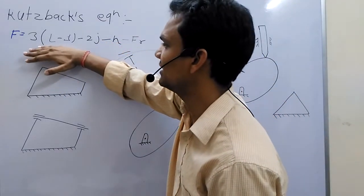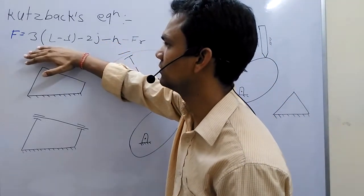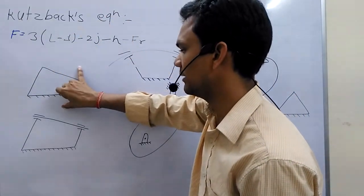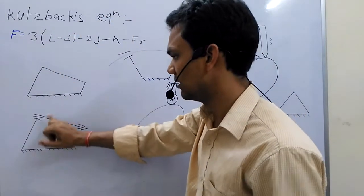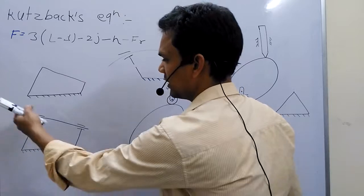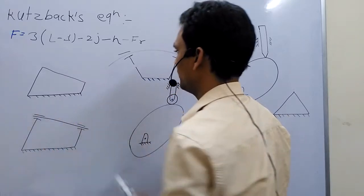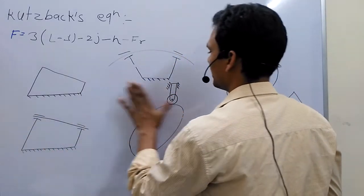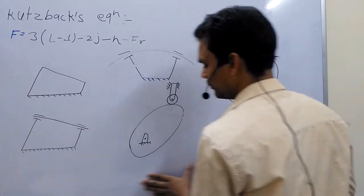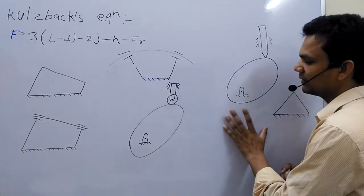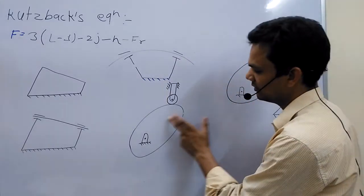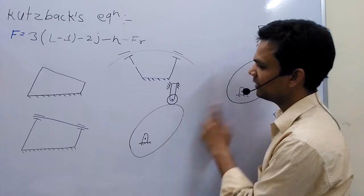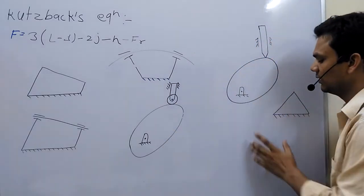Now, to understand the use, degree of freedom. Now we consider our kinematic chain — those mechanisms which are not part of our mechanism. To understand this, I consider another case. Remember one thing: the degree of freedom of a cam-follower mechanism is always one.